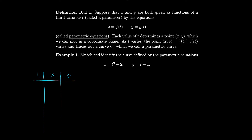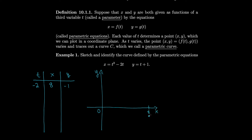Let's look at a few negative and a few positive values. For t equals negative 2: if I plug in negative 2, I square it and subtract 2 times negative 2, so I get 8 for the x value. And if I plug it in for y I get negative 1. Now let's look at a graph. We'll draw some axes. So t equals negative 2 corresponds to x equals 8 and y equals negative 1, which is this point at t equals minus 2, the point (8, negative 1).